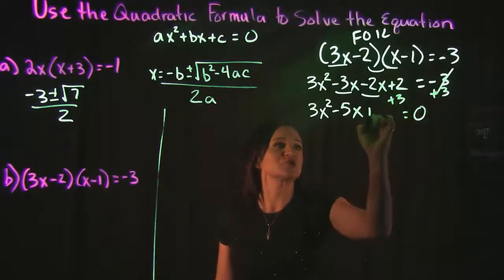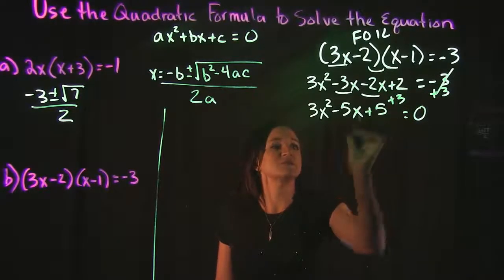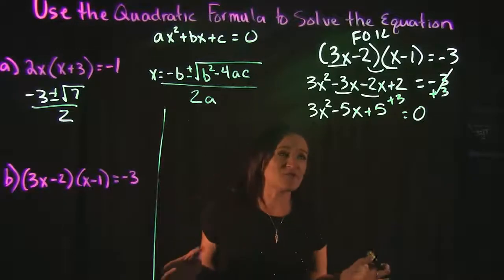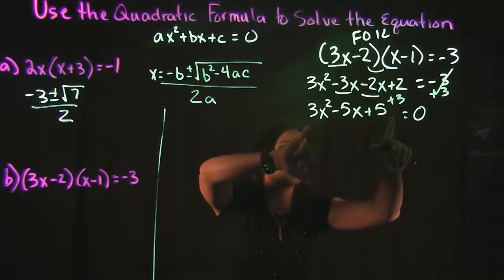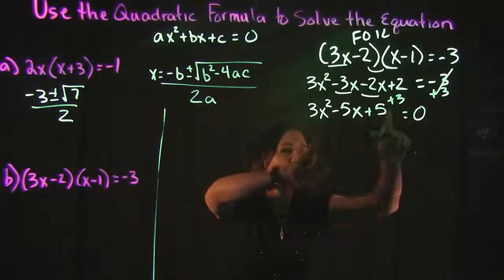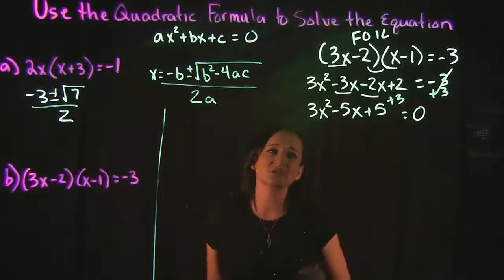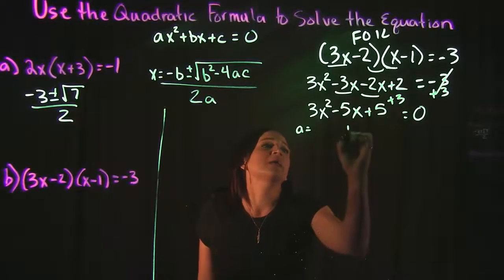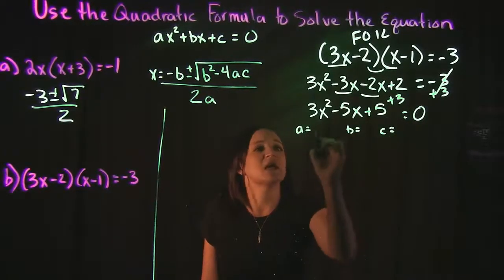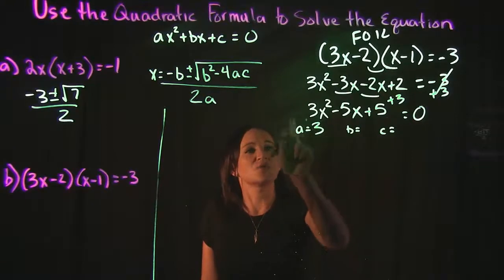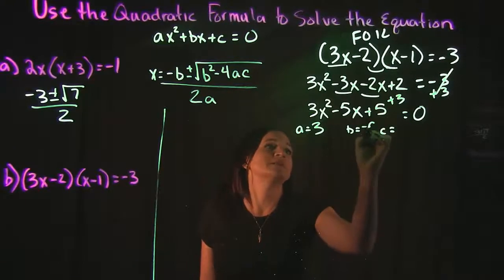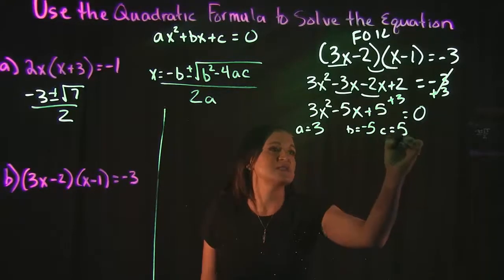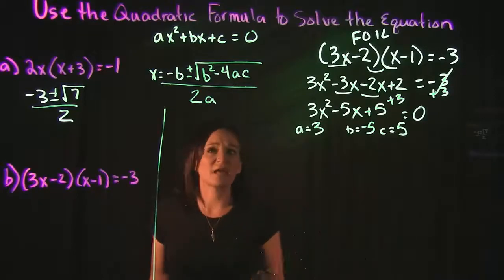Combining like terms gives us 3x squared minus 5x. We need this set equal to 0, so we add 3 to both sides — the negative 3 plus 3 zeros out on the right-hand side, and on the left-hand side, 2 plus 3 gives us 5. So everything is simplified and on one side, set equal to 0. We can now label: a equals 3, b equals negative 5, and c equals positive 5.